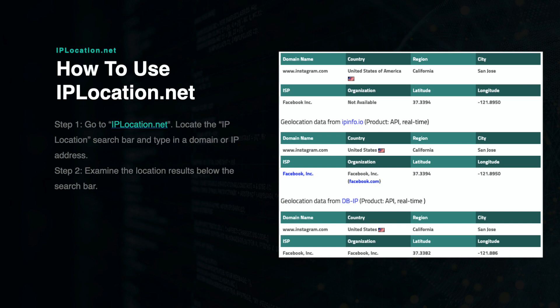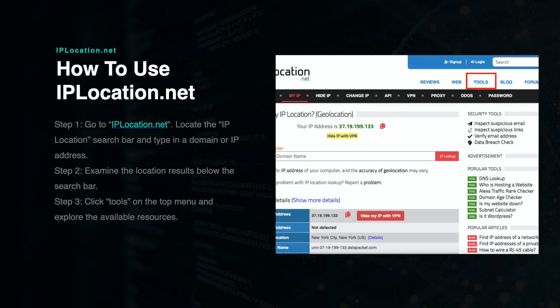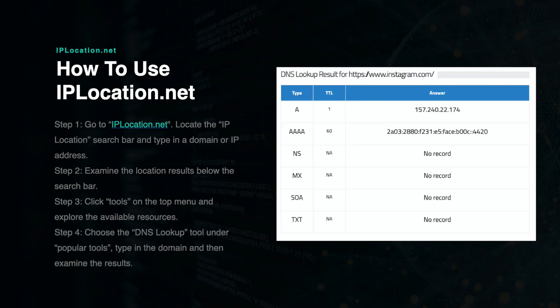There are dozens of other tools you can use to gather information about a website, which you can access by clicking the Tools button at the top of the menu. There are many tools to choose from, which are categorized by type.